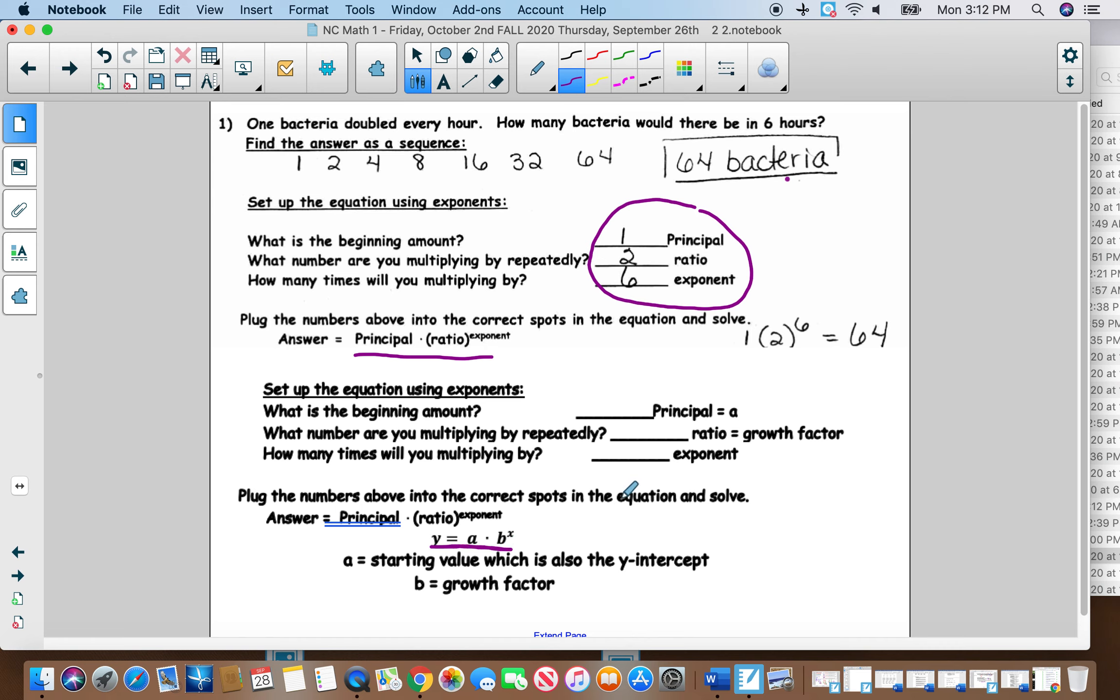So it says plug in the numbers above into the correct spot. So the principle, if you see a different type of an equation, the principle or the starting number is always going to be the number that is not being raised to a power, but it's going to be that number in front. So a lot of times they call that an A. So that principle in that case was a 1. The ratio, another word for the ratio is called the growth factor. So the growth factor is what number you're going to multiply over and over again, which is that B.